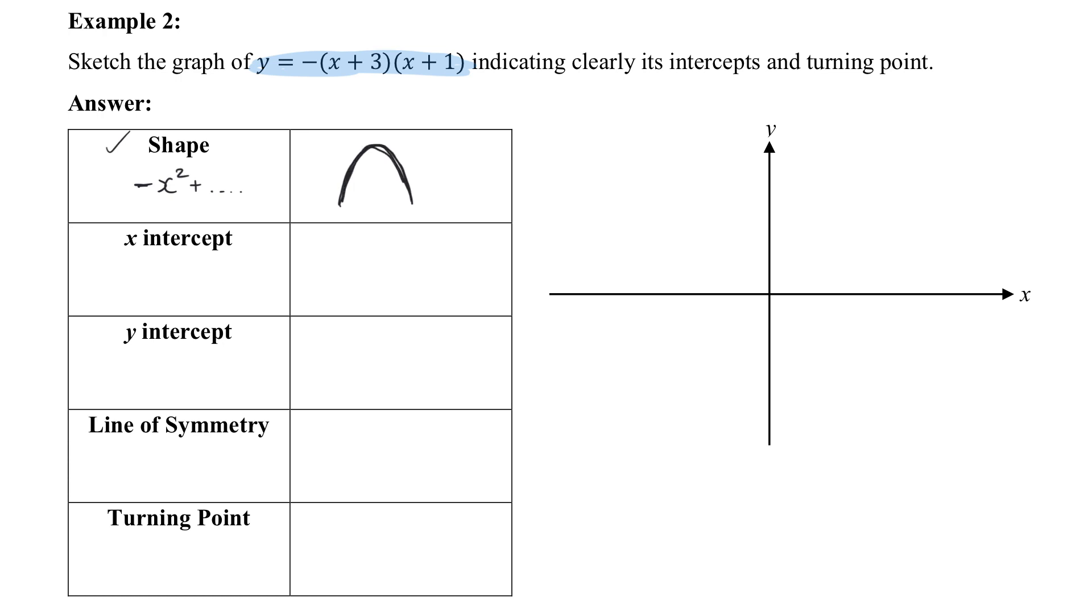Now, x intercept. Just remember opposite. I'm going to let y be zero. Some of you are very fast. You will notice that actually at the end of the day, if I were to solve it by the factorization method, let it be zero. I just will end up with two answers of which is the opposite of these two values that you see there. In other words, negative three or negative one. So, I will transfer this to the sketch. Negative one is probably here. And negative three is here.